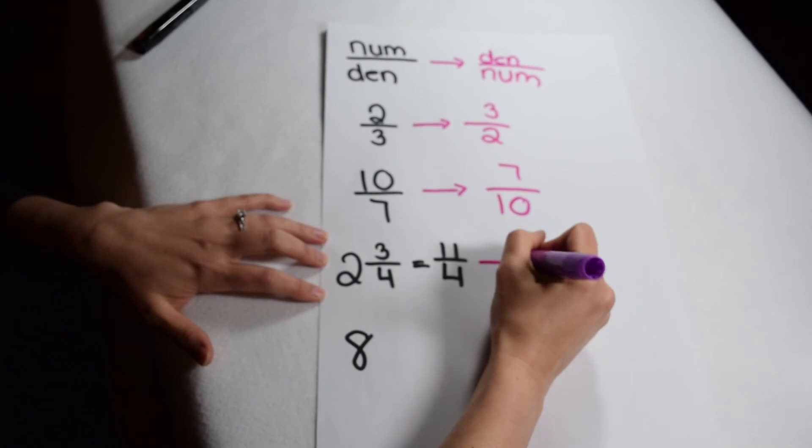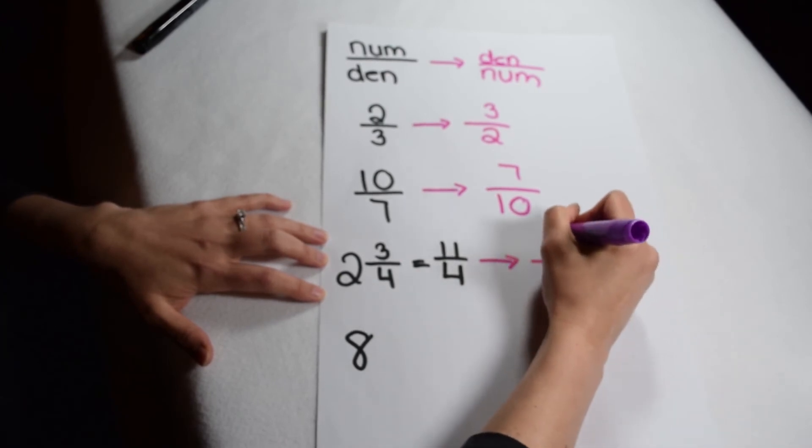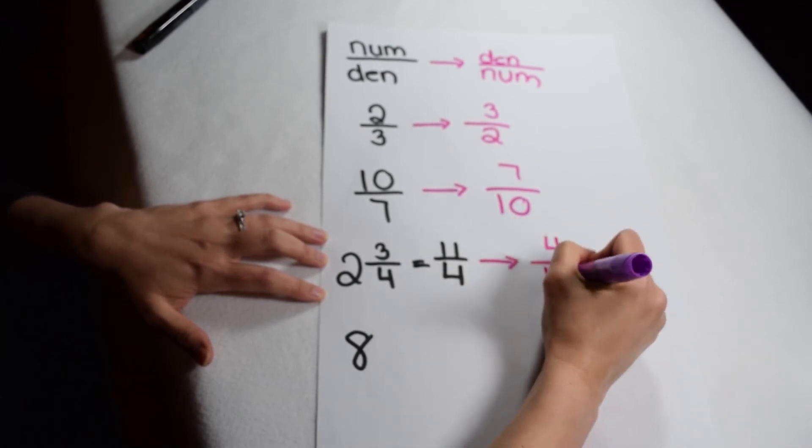Again, 11 and 4 would simply trade places, so the reciprocal would be 4/11.